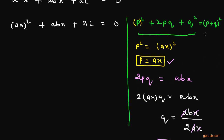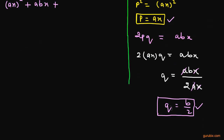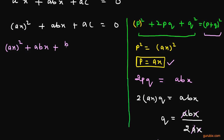Now we have the values of both P and Q. We write this quadratic equation as a perfect square: (AX plus B/2)². To complete the square, we add (B/2)² and subtract (B/2)², keeping plus AC from the original equation.